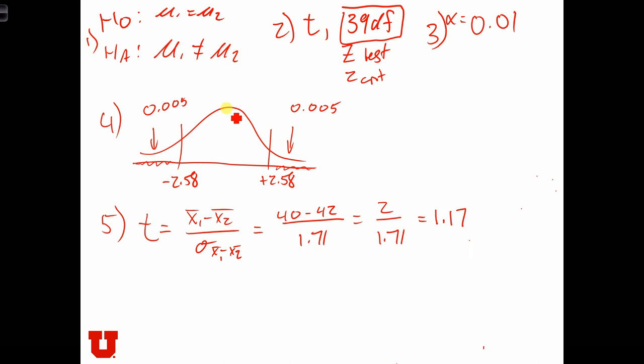So if this is the t equals 0, here we are at t equals 1.17, and therefore we fail to reject. Fail to reject. So we continue to assume that the tree heights in each canyon are the same. Tree heights are the same.